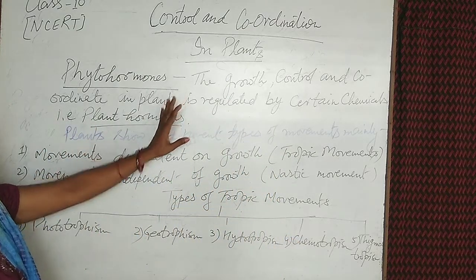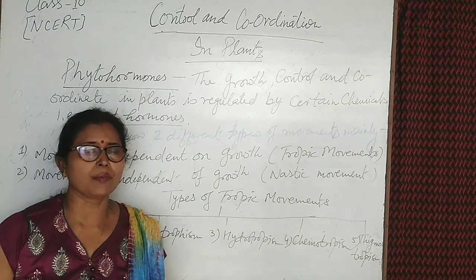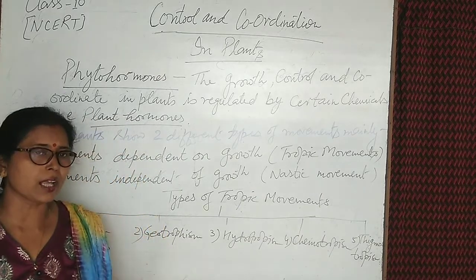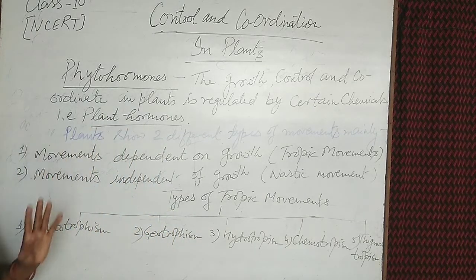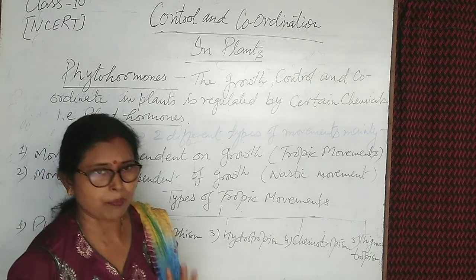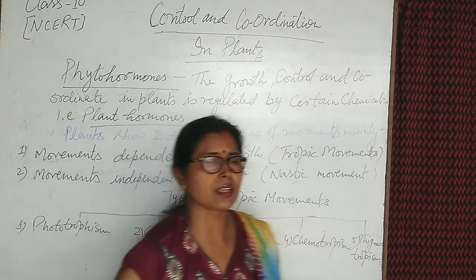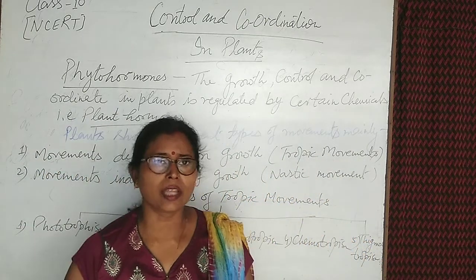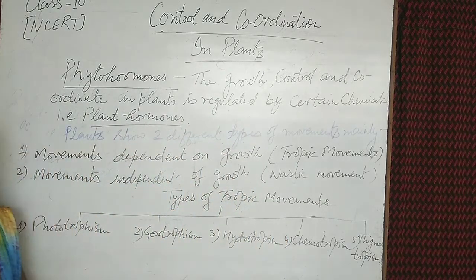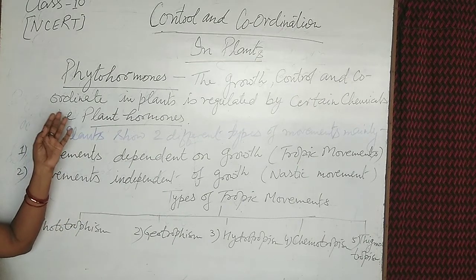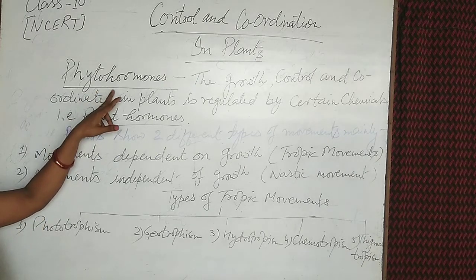In the case of plants, no nervous system or muscle system is found in the plant body, but all types of responses are shown externally. A type of chemical substance present inside the plant body is naturally synthesized, spread on the plant body for survival. This chemical substance in the case of plants is known as phytohormones.